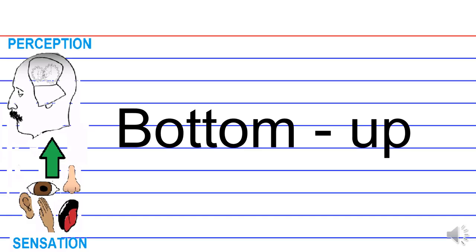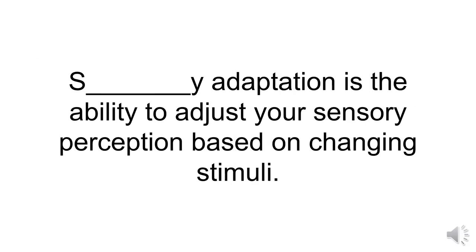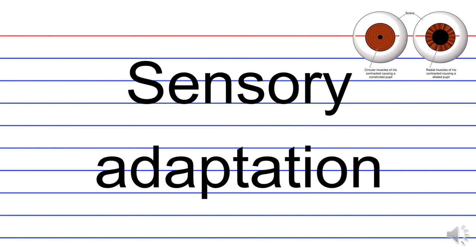Sensory adaptation is the ability to adjust your sensory perception based on changing stimuli. So what is this phenomenon? That's sensory adaptation. A really great example is the constriction of the pupil upon immediate exposure to intense light. Because of the change in intensity of light, you respond accordingly to adapt to the sensory stimuli that's being presented at you.